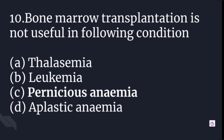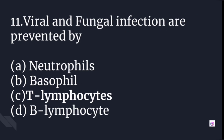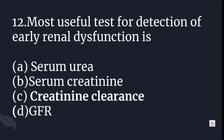Bone marrow transplantation is not useful in pernicious anemia. Viral and fungal infections are prevented by T lymphocytes. The most useful test for detection of early renal dysfunction is creatinine clearance.